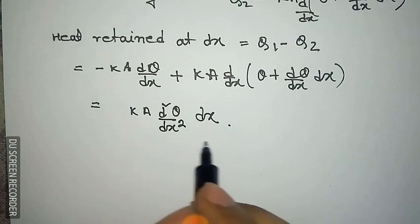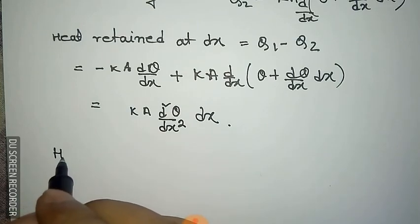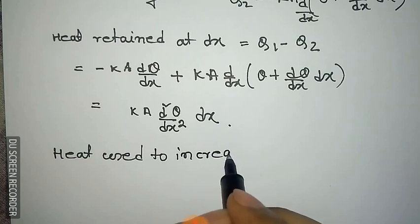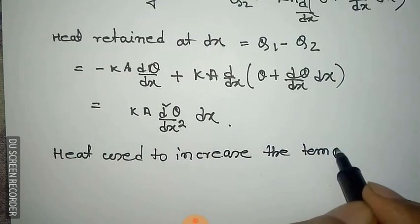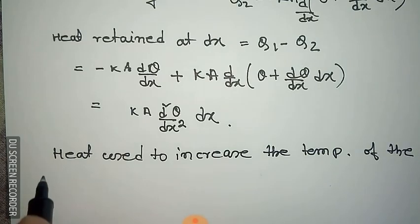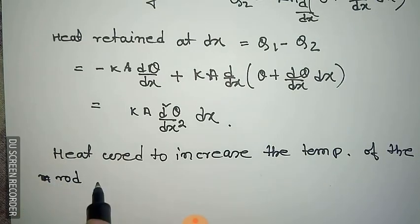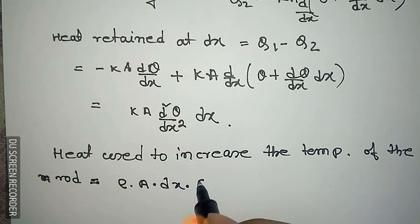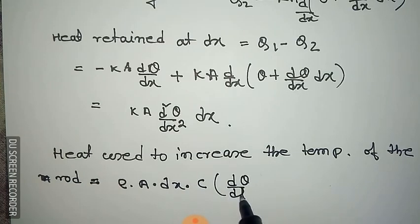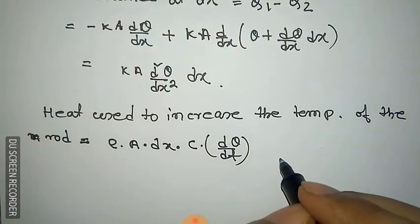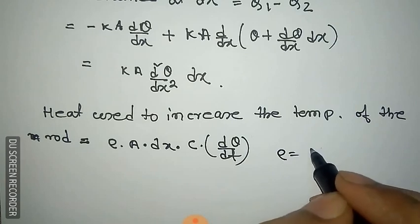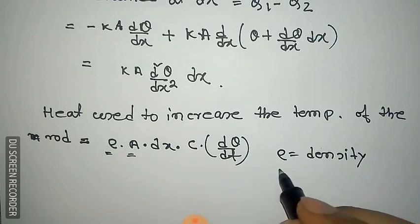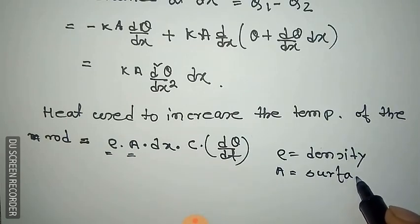This heat will be used in two parts: one is to increase the temperature of the material, and the other is for radiation to the surroundings. The heat used to increase the temperature of the material is equal to rho A dx c times (d theta / dt), where rho is the density of the material of the rod and A is the cross-sectional area of the rod.